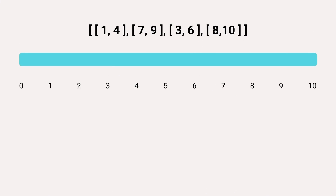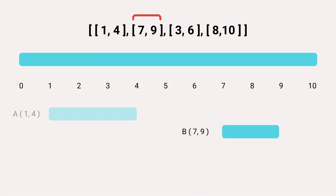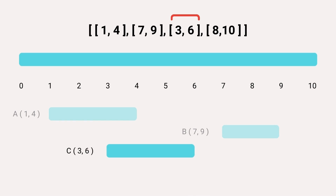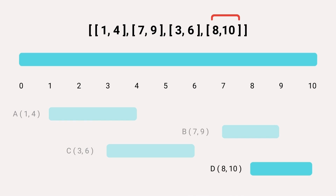Let's represent our intervals list on a timeline. Consider the first interval A, which starts at 1 and ends at 4. The second interval B starts at 7 and ends at 9. Interval C is the third interval, starting at 3 and ending at 6. The last interval D starts at 8 and ends at 10.